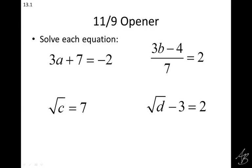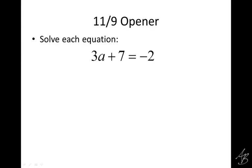On the first problem, 3a plus 7 equals negative 2. What are we going to start with? Line of equality — draw that line of equality and circle the variables. We keep the left and right half separate so we can keep it organized, and remember whatever we do on one side we have to do on the other. We'll circle the variable because we want to get that a by itself, so I'm going to have to get rid of the 3 and the 7.